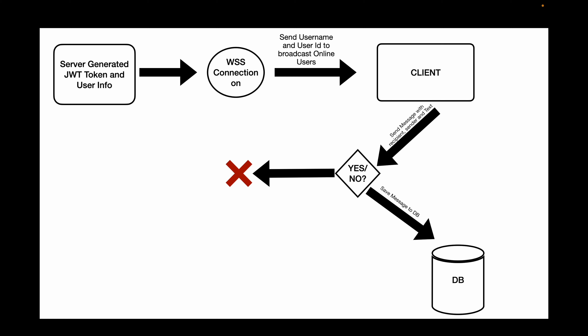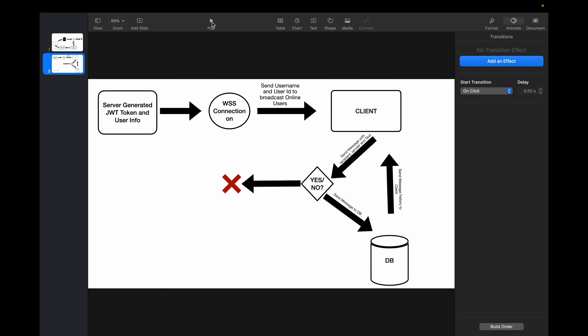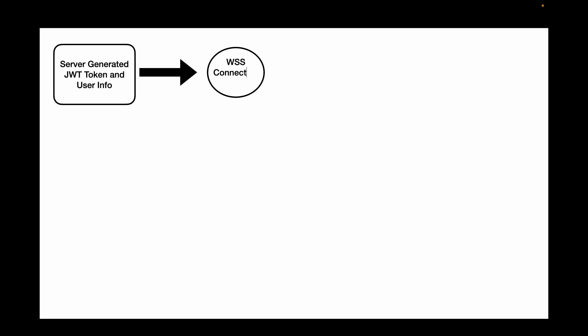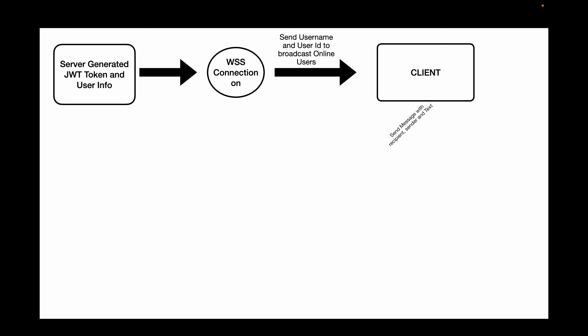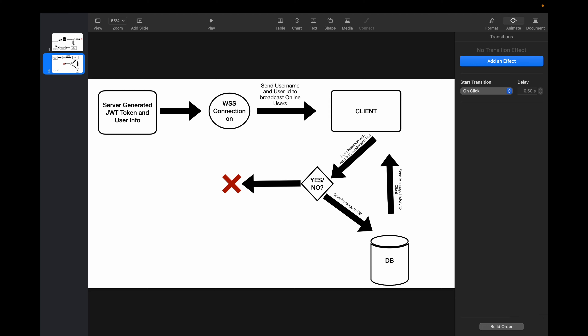Once the message includes all required fields, it's saved to the database. We then query the database again and send the message history back to the client. That's basically the idea of what we're doing with our web socket — using both the client and the server to communicate throughout the application. It sounds simple but it's a lot of manual labor to get it all done.